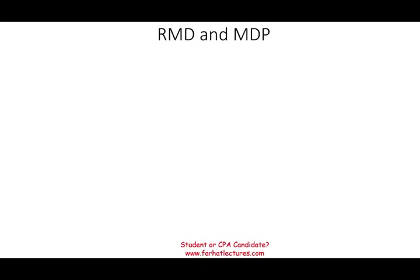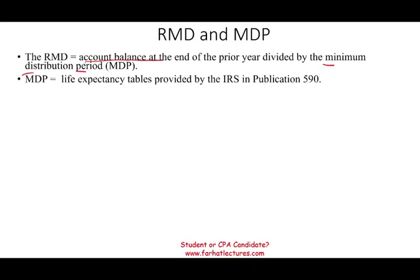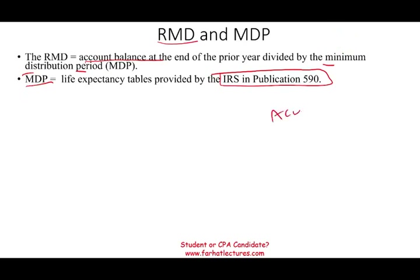To calculate the required minimum distribution, take the account balance at the end of the prior year and divide it by the minimum distribution period (MDP). The MDP comes from the life expectancy tables provided by the IRS in Publication 590 — that number will be given to you. So: RMD = Account Balance ÷ MDP. This gives us the required minimum distribution you must take out.